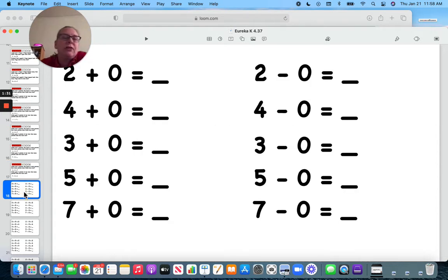Now let's look at these. Two plus zero is two. Two minus zero is two. I have two, I don't add any, I don't take any away. Four plus zero is four, four minus zero is four, because I'm not adding and I'm not subtracting. They're staying the same.